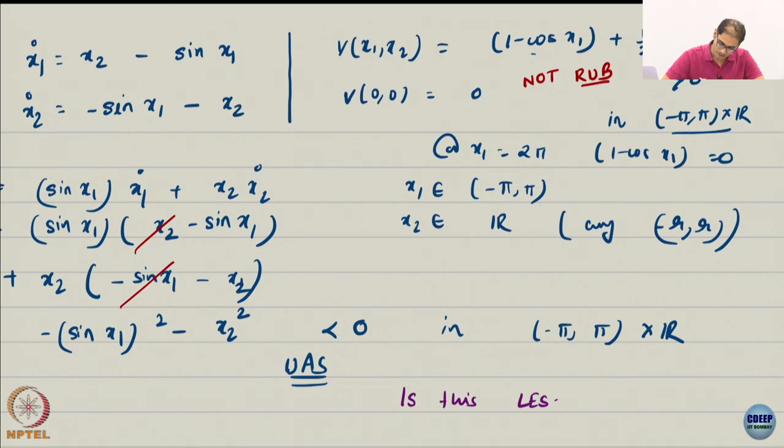What is the ball of radius R? We want x1 to lie between this and x2 can be anything. Okay? This is a funny looking ball, not a ball, not a ball at all. But I hope you understand. There is something local about this. In one axis, if you draw it, it is like in one axis it is only this much. In x2 axis it can go anywhere.